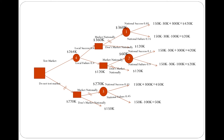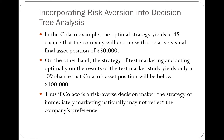Now let's consider a scenario where we have some behavior toward risk. Suppose we have risk-averse behavior — we're trying to avoid risk as much as possible. In the optimal decision selected without regard to risk, there is a 45% chance the current asset position becomes $50,000, which is a relatively high chance of having a very small final asset position. When we look at testing the local market and becoming a national failure, there is a very slight chance our current asset position will be less than $100,000.